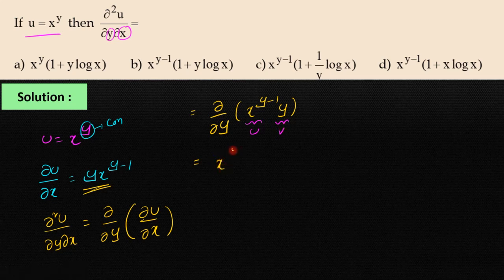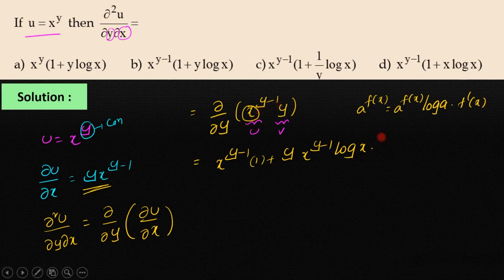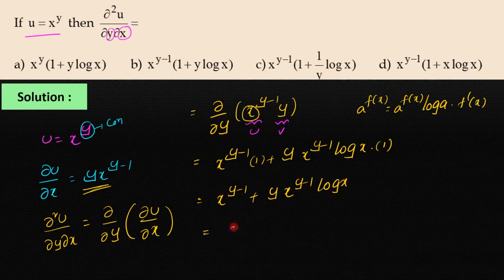Applying the uv rule: x^(y-1)·(differentiation of y is 1) plus y·(differentiation of x^(y-1) with respect to y). Here x is constant, so differentiation of x^(y-1) is x^(y-1)·log x. Taking x^(y-1) as common, we get x^(y-1)·(1 + y·log x).